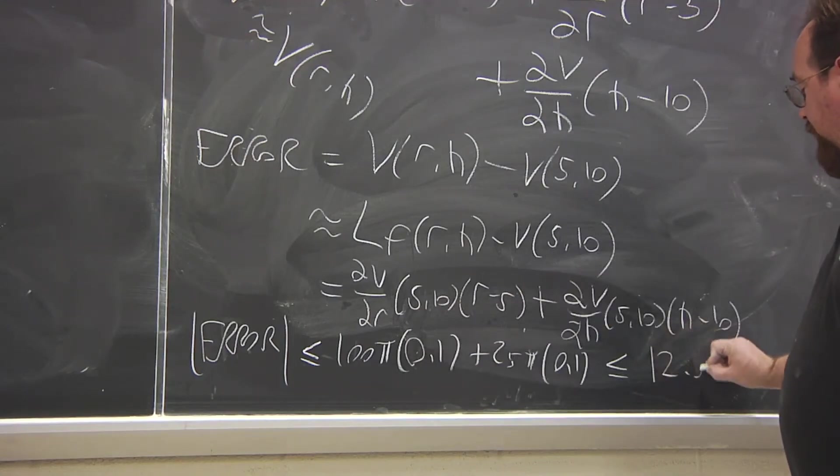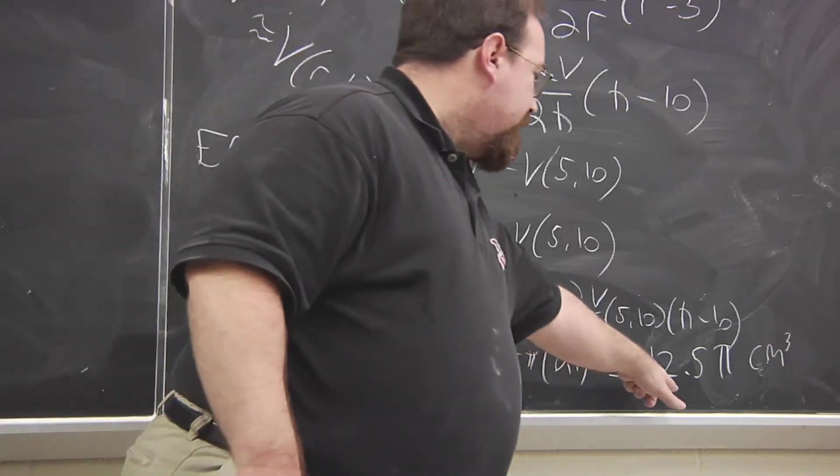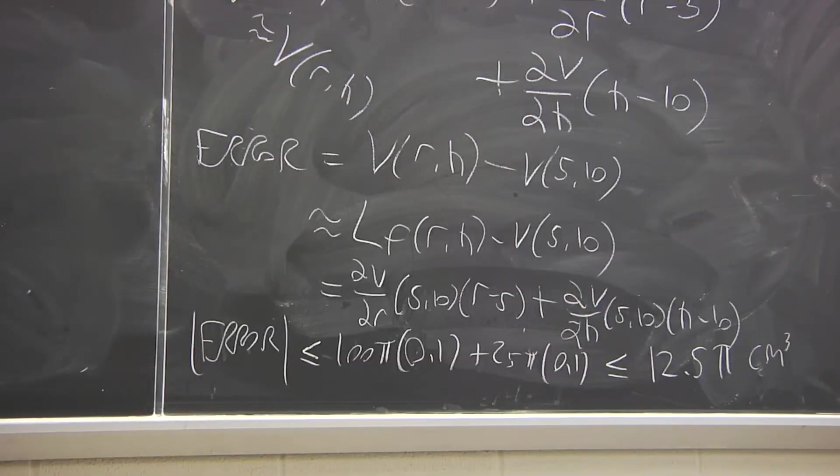What we get is 12.5π cubic centimeters. Well, that's quite a bit of amplification. So if you're off by even a tenth of a centimeter in the radius and the height, you could be off by roughly this much in the computed volume.